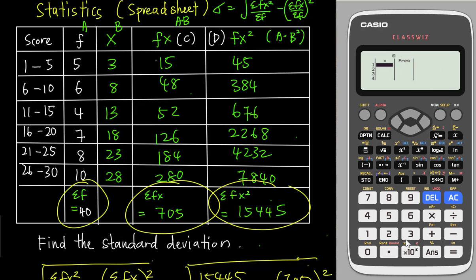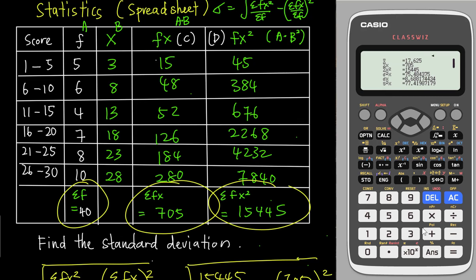Once frequency is enabled, insert your x values: 3, 8, 13, 18, 23, 28, and their corresponding frequencies: 5, 6, 4, 7, 8, 10. Make sure you don't confuse yourself and insert all numbers correctly and carefully. After inserting all values, go to option and look for One Variable Calculation (number 3). You can see sum of x = 705, which is correct, and n (sum of f) = 40.